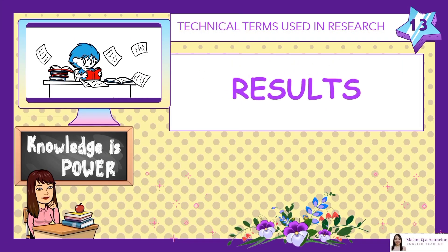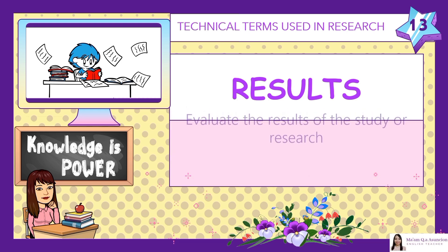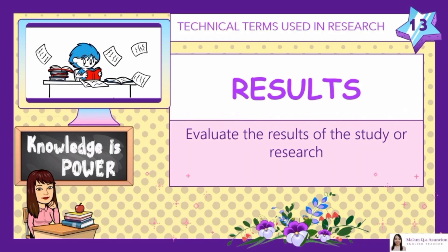Number 13: Results. Evaluate the results of the study or research. The results section of the research paper is where you report the findings of your study based upon the information gathered as a result of the methodology you applied. The results section should simply state the findings without bias or interpretation, arranged in a logical sequence.